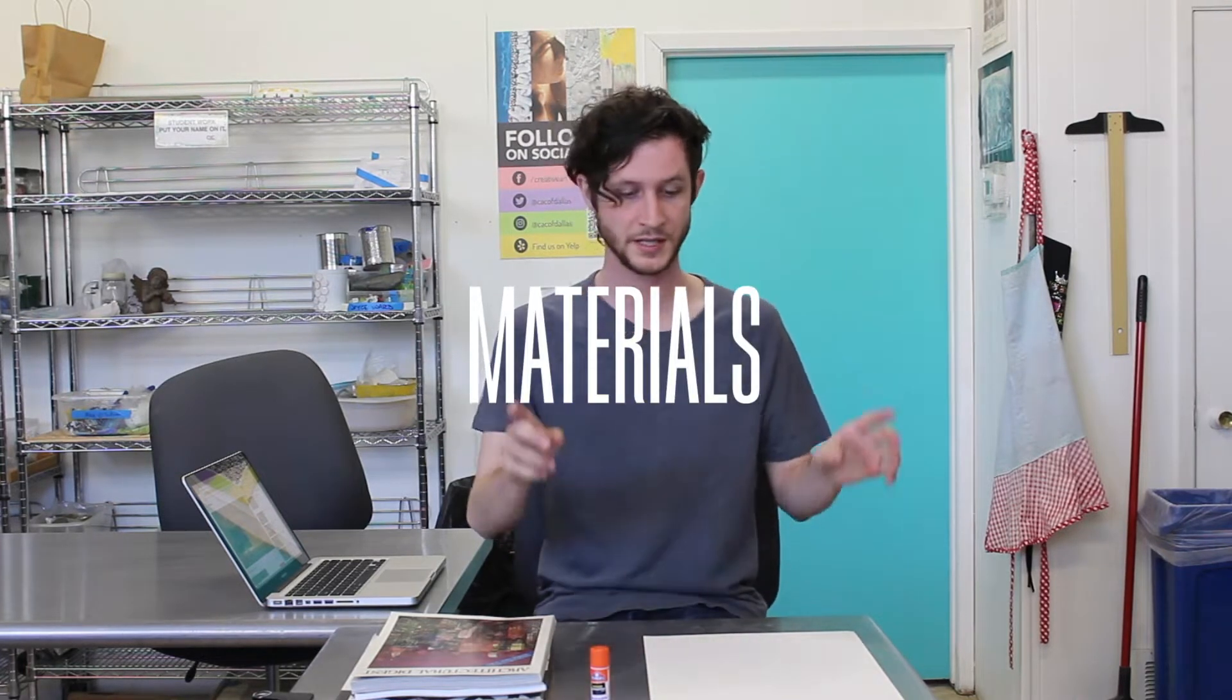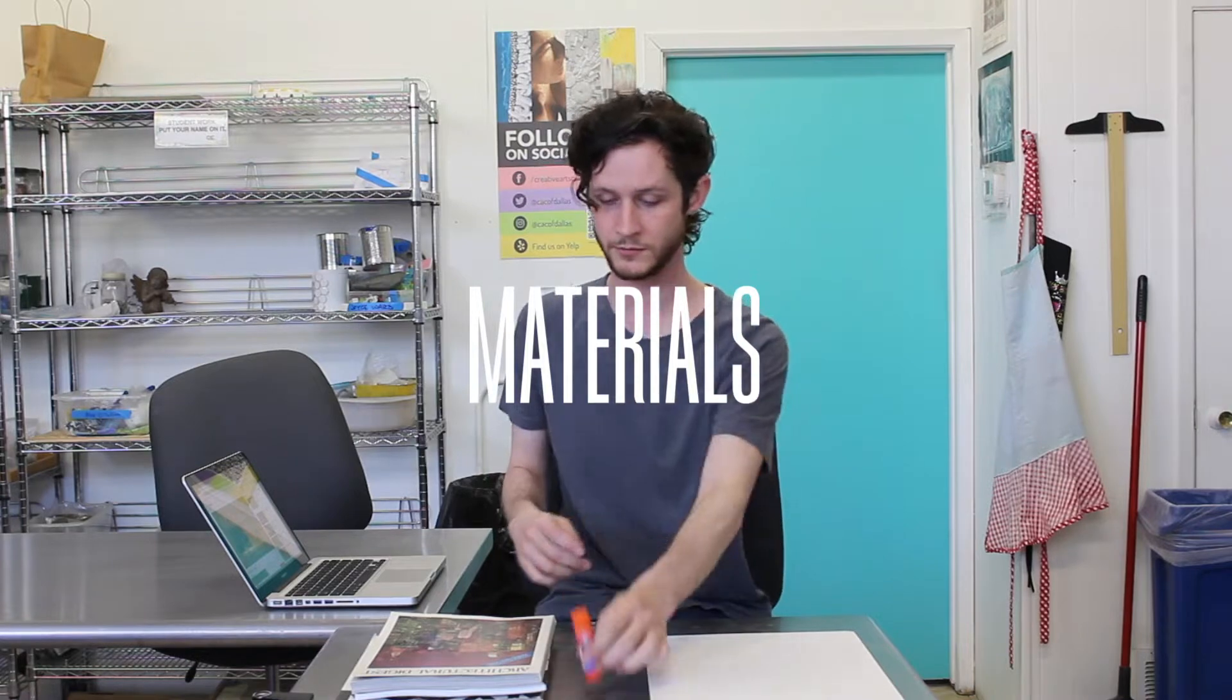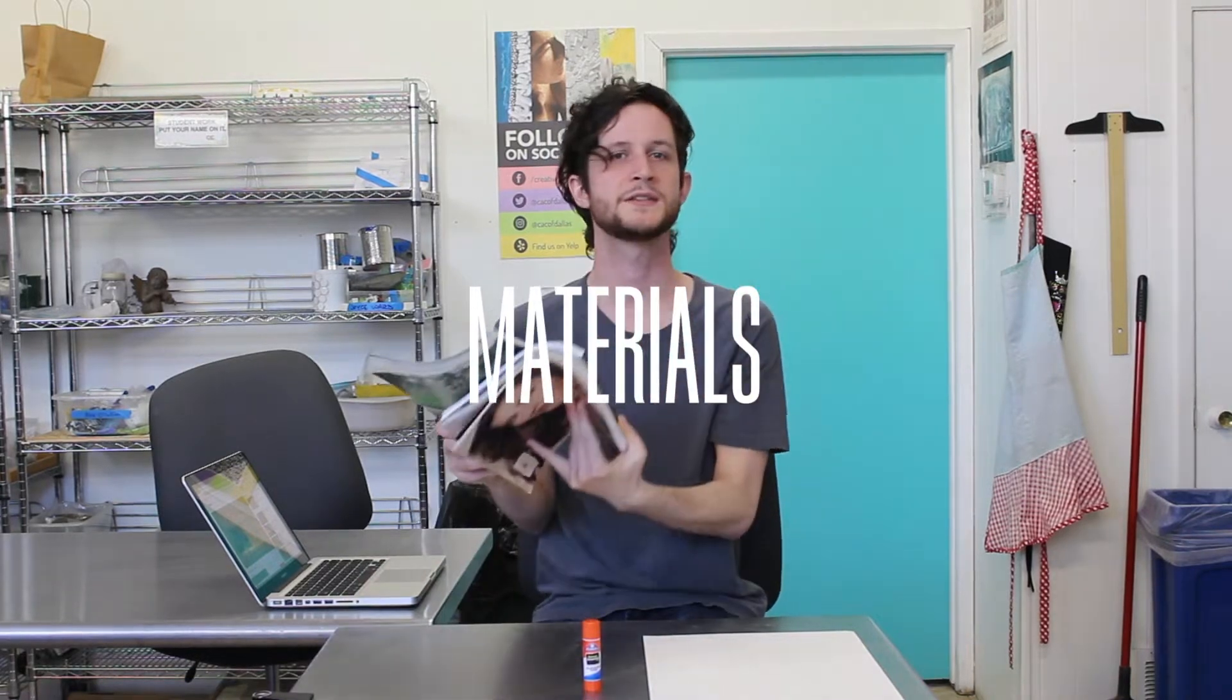Essentially you take images from somewhere else and then you mash them together to make one thing. But today what you'll need is a piece of paper, Elmer's glue, four magazines that you don't mind tearing up.